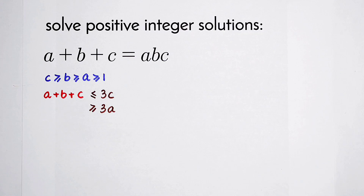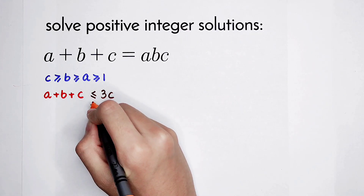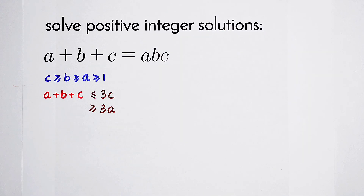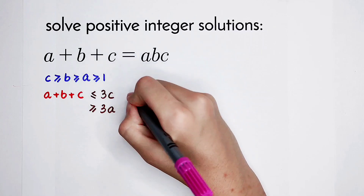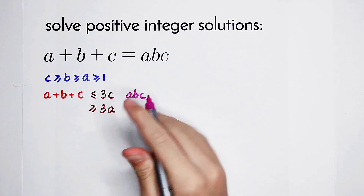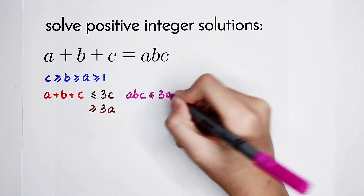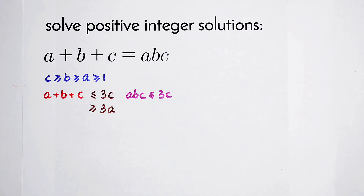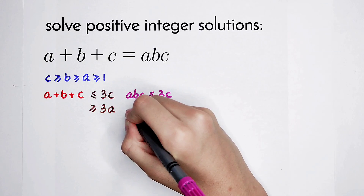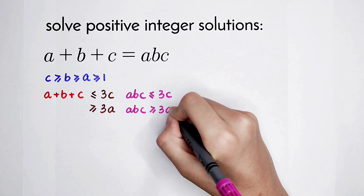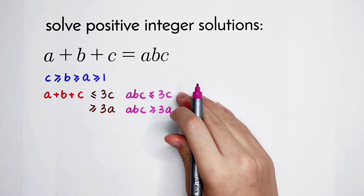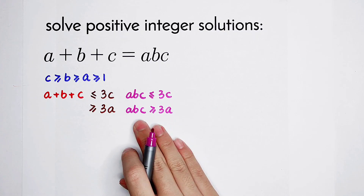Pay attention to the symbols — smaller or equal to, and greater or equal to. If we choose the first bound, then since A plus B plus C equals ABC, substituting gives ABC is less than or equal to 3C. Cancel the C, and we get A times B is less than or equal to 3. For the second way, ABC is greater or equal to 3A, so canceling A gives BC is greater or equal to 3.